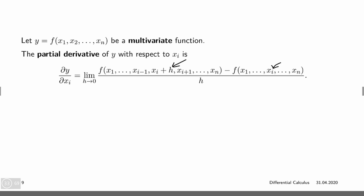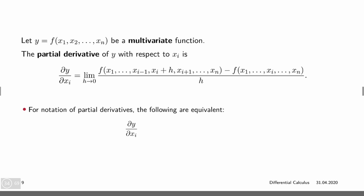If we let h go to 0, we get the partial derivative with respect to xi. We can denote this in several ways: dy over dxi, df over dxi, f subscript xi as a shorthand notation, fi as an even shorter form, di of f, or dxi of f.